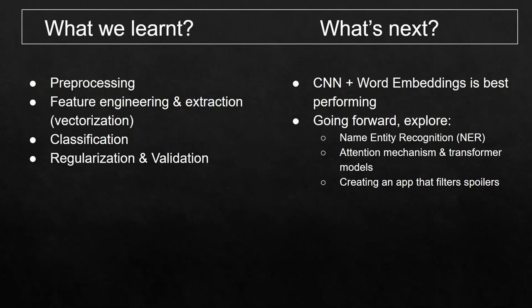What's next? Due to the limitations of time, we have yet to further explore the usage of named entity recognition, attention mechanisms, and transformer models, which can all be used to improve accuracy. One can also create a usable product like an app which automatically filters and hides spoilers using these models. These and more can be looked into to give us all a spoiler-free experience. Thank you.